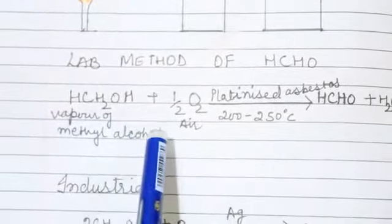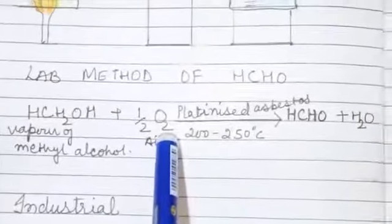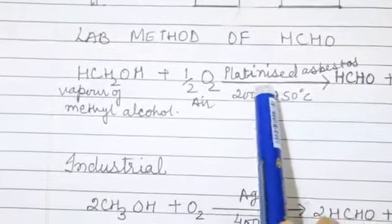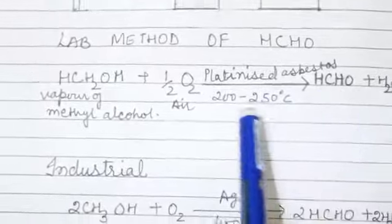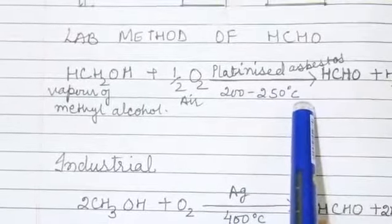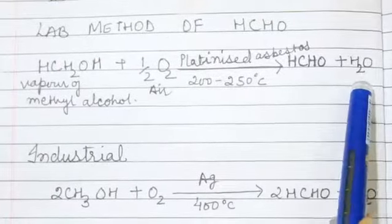Methanol in the vapor form when reacted with half molecule of O2 in the presence of platinized asbestos at 200 to 250 degree centigrade, then formaldehyde is formed with water molecule.